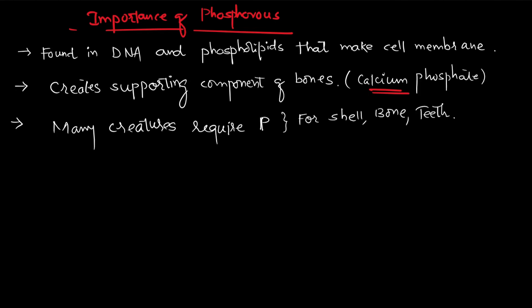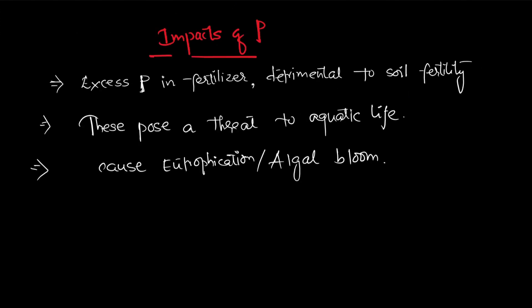Excess phosphorus in fertilizers is detrimental to soil fertility. Up to a proper ratio it aids plant growth, but in excess it harms soil fertility. It also poses a threat to aquatic life, as excess fertilizer eventually reaches aquatic bodies. Furthermore, it causes eutrophication or algal bloom — for a detailed explanation of that, refer to the previous video.